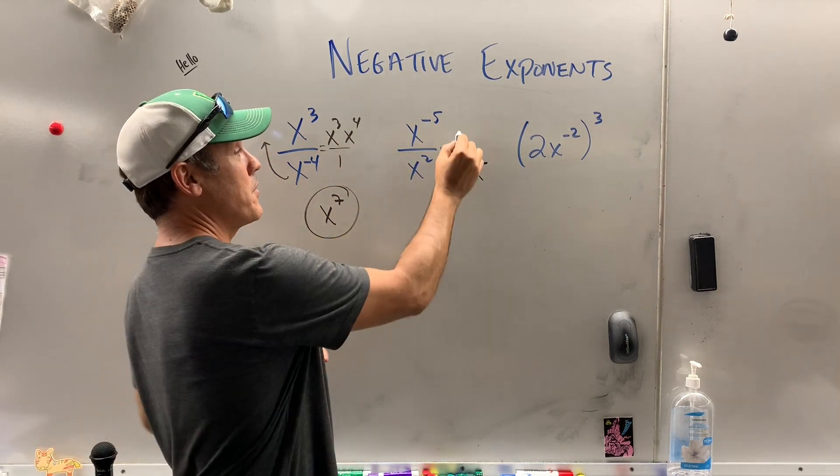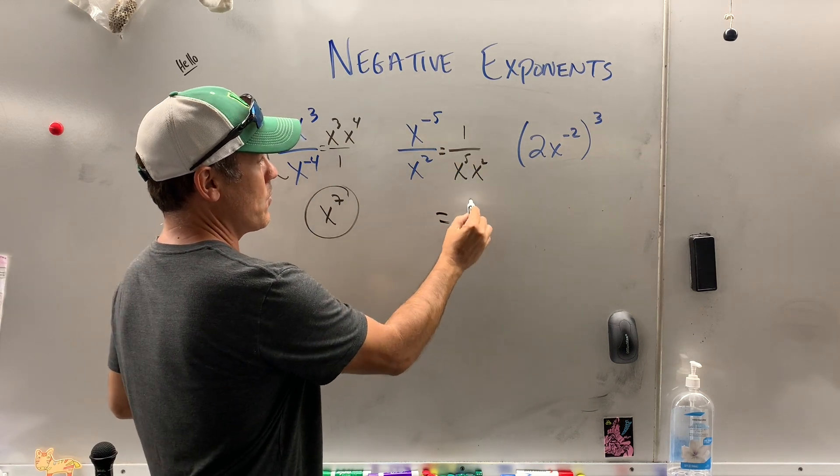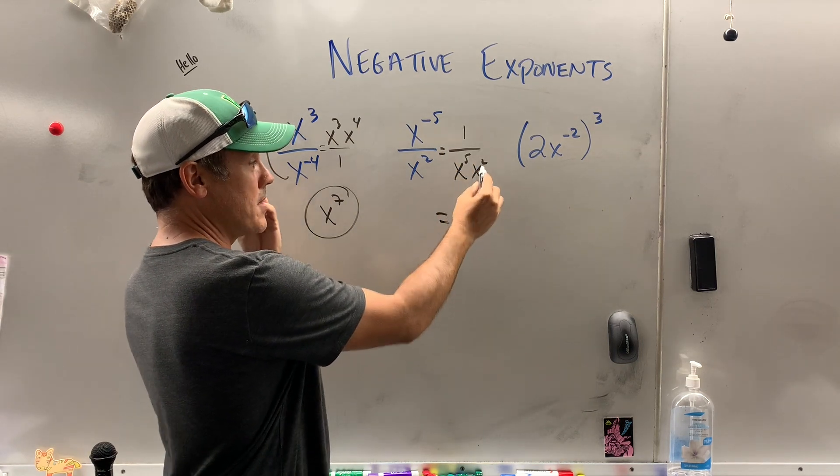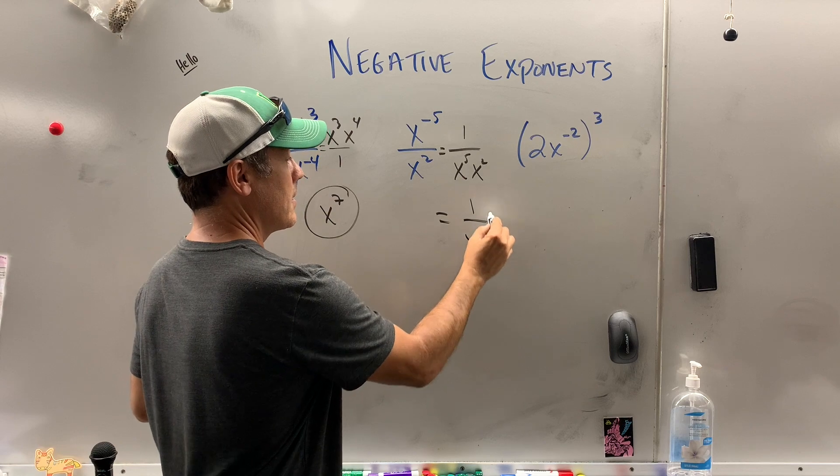And when there's nothing here in math, you put a 1. So what is that? 1 over x to the 5th times x squared is x to the 7th.